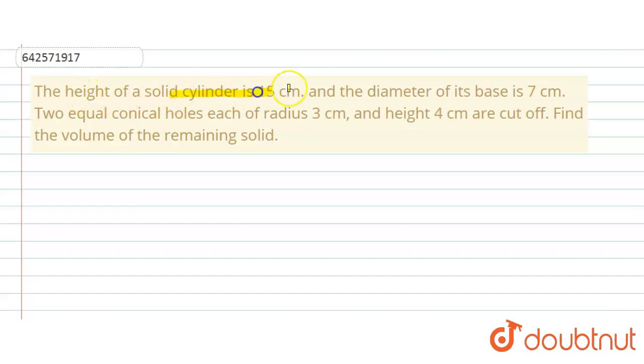the height of a solid cylinder is 15 centimeters and the diameter of its base is 7 centimeters. Two equal conical holes, each of radius 3 centimeters and height 4 centimeters, are cut off. Find the volume of the remaining solid.